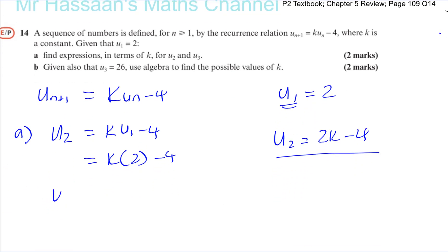So we've got u 2 and we want to find u 3 as well. So u 3 is equal to k times u 2, the term before it, minus 4. So you're going to have k times, well, u 2 is equal to 2k minus 4, so you'll have 2k minus 4 and then minus 4. So we can say u 3 is going to be 2k squared minus 4k minus 4.